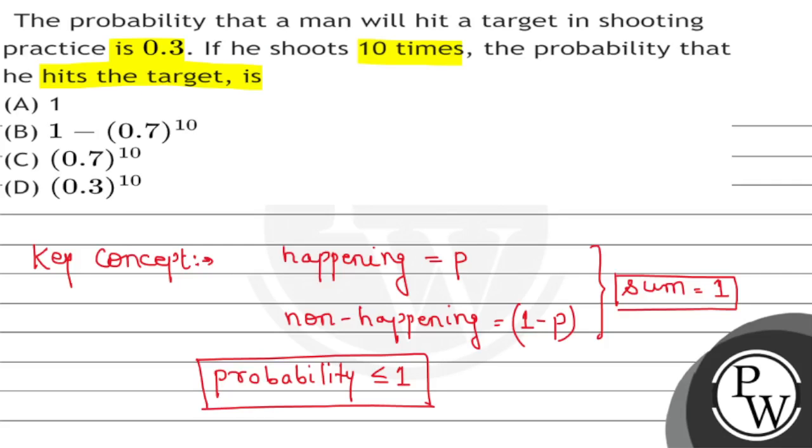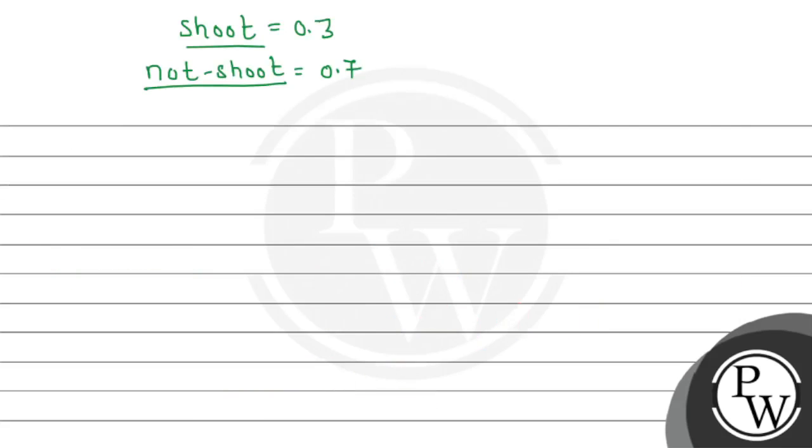Now, we have to find the probability of hitting the target 10 times. And this is the probability of not hitting the target in 10 attempts. If I talk about probability of not hitting the target 10 times, then what will happen? This will be 0.7 power 10.